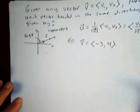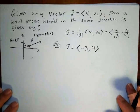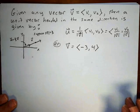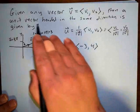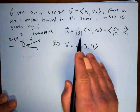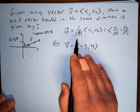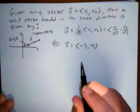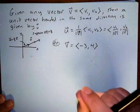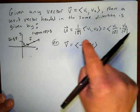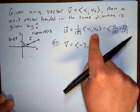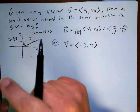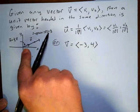Given any vector, we can always find the unit vector that's headed in the same direction. If we're given vector (v1, v2), we can find the magnitude of this vector and then scale it down. Here's a diagram to help understand what's happening.